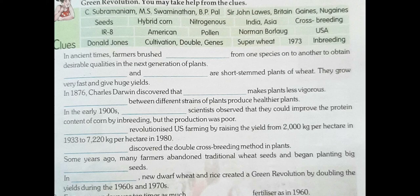Question number 10: farmers nowadays use 10 times as much dash fertilizers as in 1960. So what kind of fertilizers do they use? They use nitrogenous fertilizers, which are very good for the plants.